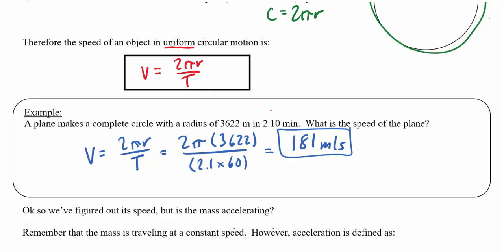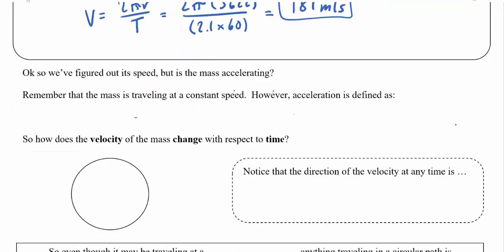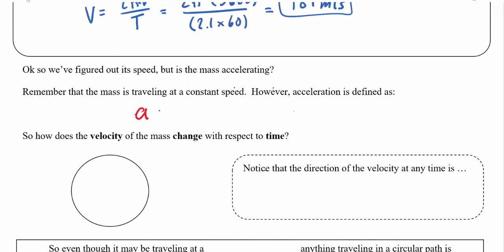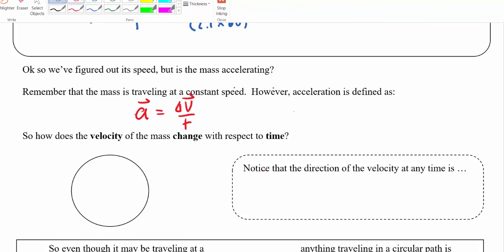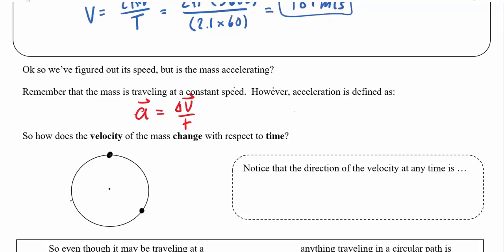Even though the speed is constant in uniform circular motion, the mass is still accelerating. Acceleration is defined as a change in velocity — a vector — over time. If an object travels in a circle counterclockwise, its velocity at any instant is tangent to the circle, meaning it's like a straight line touching the circle at exactly one point. The direction of velocity keeps changing as the object moves around.